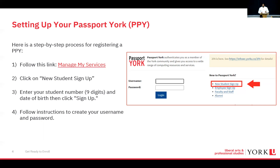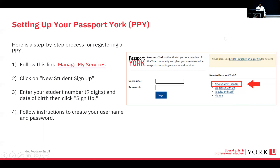Once you've completed that, finish and complete the sign-up process. If you are having any issues whatsoever, contact the University Information Technology service — their information will be in the description below. They'll be able to assist you with any problems in setting up your York account or any other technical difficulties that may come up.